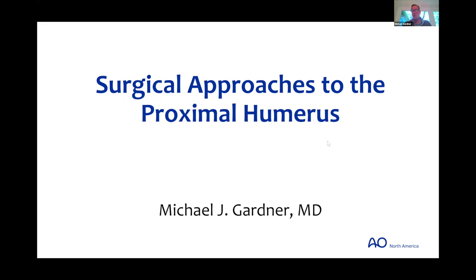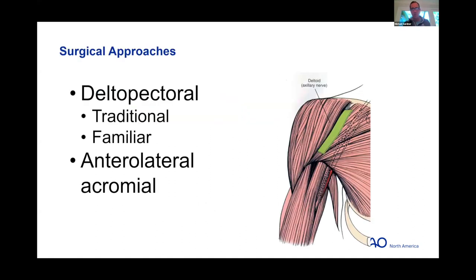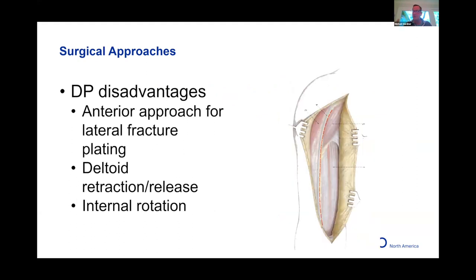Now — surgical approaches to the proximal humerus. The deltopectoral approach is clearly the workhorse to the shoulder: everyone's trained on it, traditional and familiar. But I think a lot of the steps involved in treating a proximal humerus fracture with ORIF are difficult through a deltopectoral approach. I'll show some of that and then walk through an anterolateral acromial approach — the deltoid split.